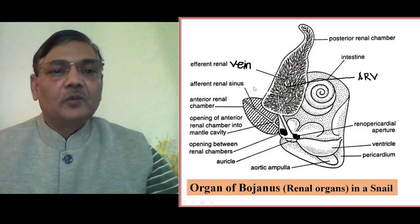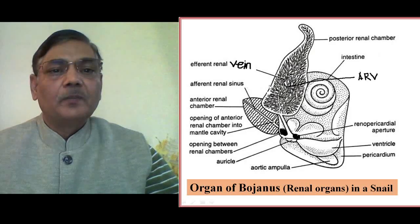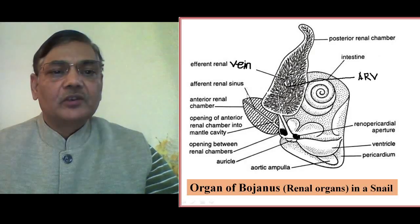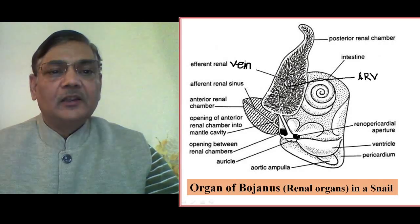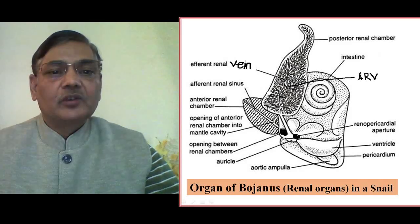In the case of mollusks, they are classified into several classes. Here, I am mainly explaining the organ of Bojanus of a snail, which belongs to class Gastropoda, and the other case will be a bivalve animal like Lamellidens. In this diagram, you can see two prominent structures. The lower one is one chamber, and the upper left structure is another chamber of the kidney. These two structures make the kidney, or renal organ, in the case of a snail.